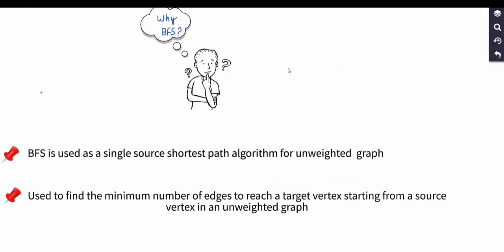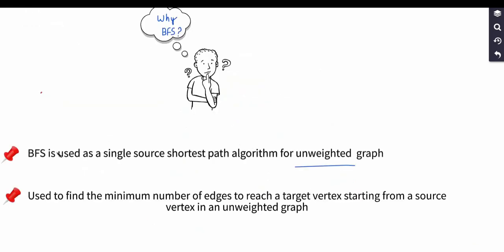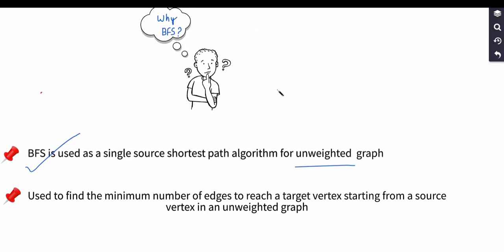We use BFS here because BFS is used as a single source shortest path algorithm for unweighted graphs. We have an unweighted, directed graph where the weight of each edge is one — we perform one operation to move from one word to another. Therefore BFS can find the minimum number of edges to reach a target vertex starting from a source vertex.